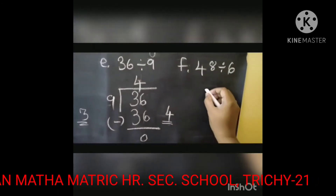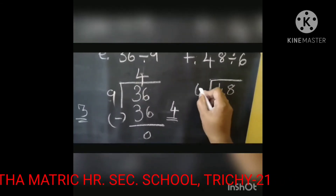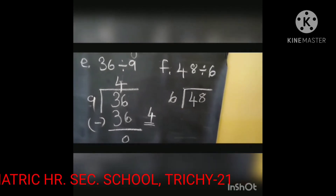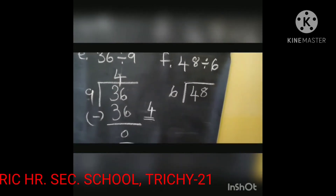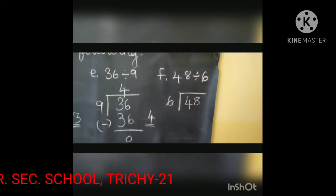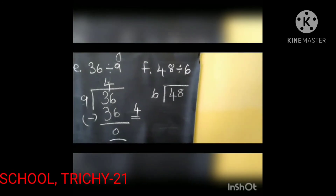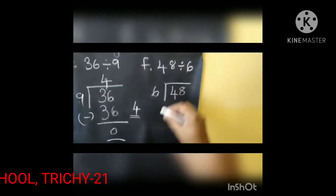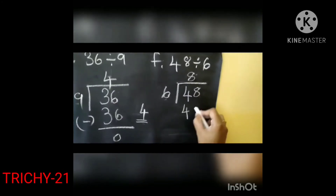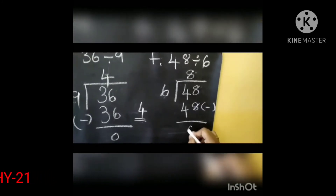Children, let's see the next one: 48 divided by 6. The same thing — you want to check the 6 table. The number you want to get is 48. In the 6 table: 6 6's are 36, 6 7's are 42, 6 8's are 48. So write 8 here. 6 8's are 48. Subtracted: 48 minus 48, answer is 0.